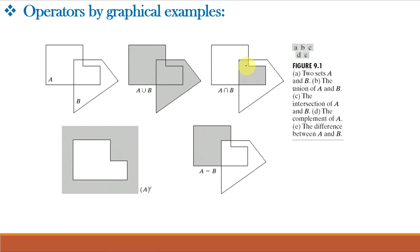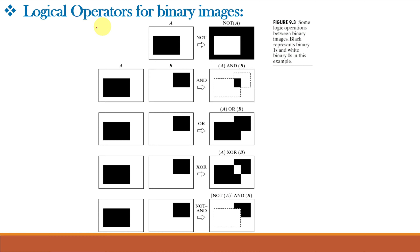The complement of A — all the elements outside A will be A complement. And the difference A minus B: we subtract the elements of B from A, and the remaining shaded portion is the result. Let us also see some logical operators for binary images.